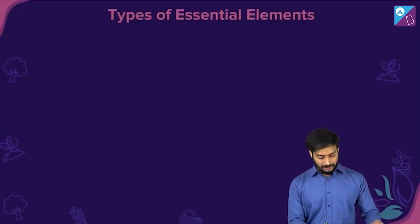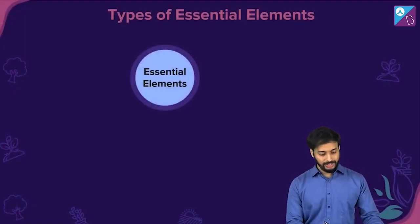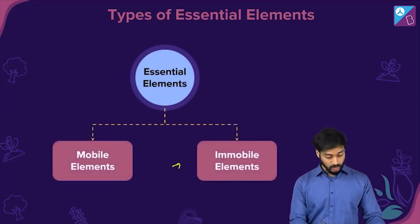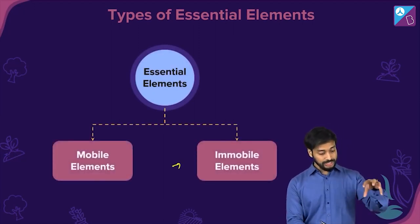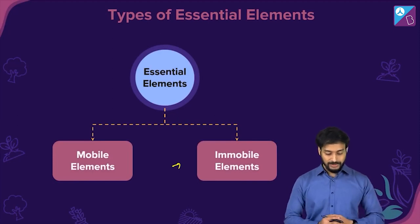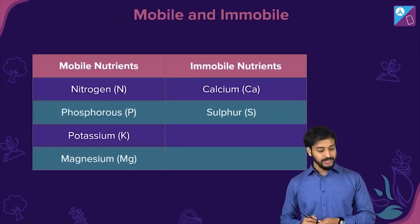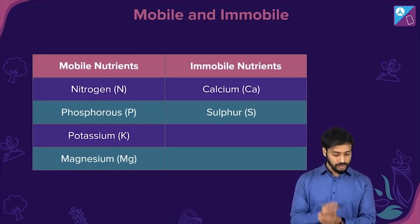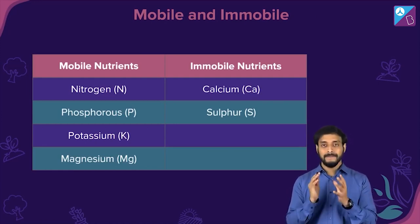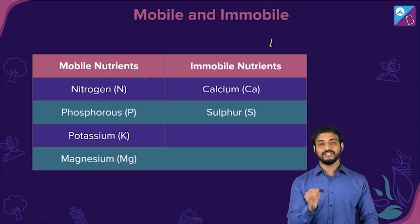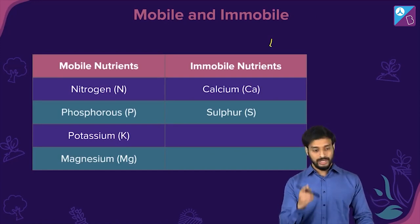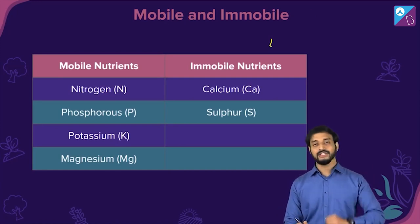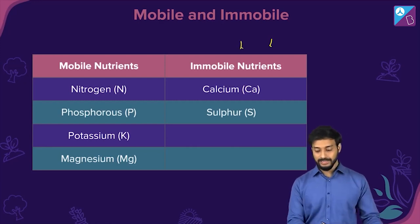Essential elements can be classified into mobile elements and immobile elements. The mobile nutrients are nitrogen, phosphorus, potassium, and magnesium — NPK and magnesium. The immobile elements are calcium and sulfur.